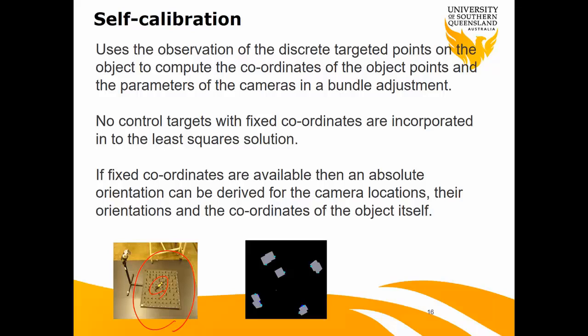So let's see what we've learned. We use some discrete targeted points on the object to compute the coordinates of the object point, and we can get the parameters of the camera using bundle adjustment in the software — we don't do that, the software does it for us. There is no control target with fixed coordinates. On-the-job calibration has pre-coordinated targets; in self-calibration, we don't have any fixed coordinates. If you have them, it's very good — you can get absolute orientation as well. But in real life, you don't need it. Are we good with what self-calibration technique is, which you're going to use most of the time?